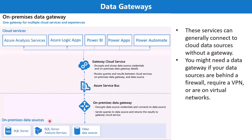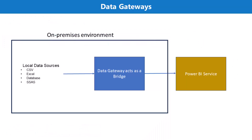However, if your data is sitting behind a firewall, requires a virtual private network (VPN), or is hosted on a virtual network, then in addition to on-premises scenarios, you require a data gateway. This is a very important point to remember: if your data source is on-premises or sits behind a firewall, requires a VPN, or is on a virtual network, you will need to install an on-premises data gateway.